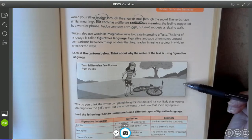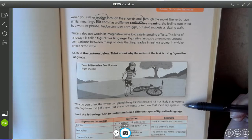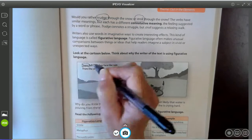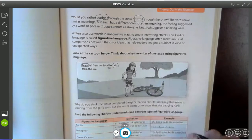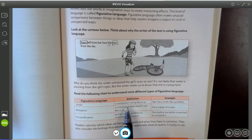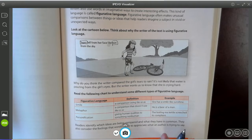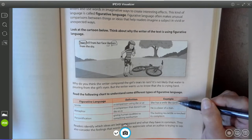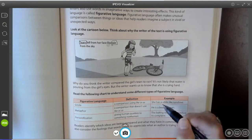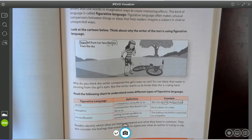So let's take a look at this picture. Tears fell from her face like rain from the sky. So why do you think the writer compared the girl's tears to rain? It's not likely that water is pouring from the girl's eyes. But the writer wants us to know that she's crying hard. Because when rain falls, it could fall hard. And so we're comparing tears to rain. And we're using the word like. So that tells me that this is a simile. Because similes often compare two things using like or as. So for an example, she has a smile like sunshine. All right. Smile is being compared to sunshine. A sunshine brightens someone's day. A smile brightens someone's face. So this simile is indicating that it's bright and it's cheery.